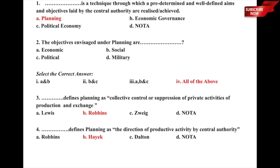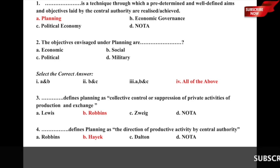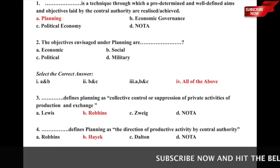Question number 3: Dash defines planning as collective control or suppression of private activities of production and exchange — whether it is a) Levis, b) Robbins, c) Zewick, or d) none of the above. The correct answer is option b) Robbins, who defines planning as collective control or suppression of private activities of production and exchange.